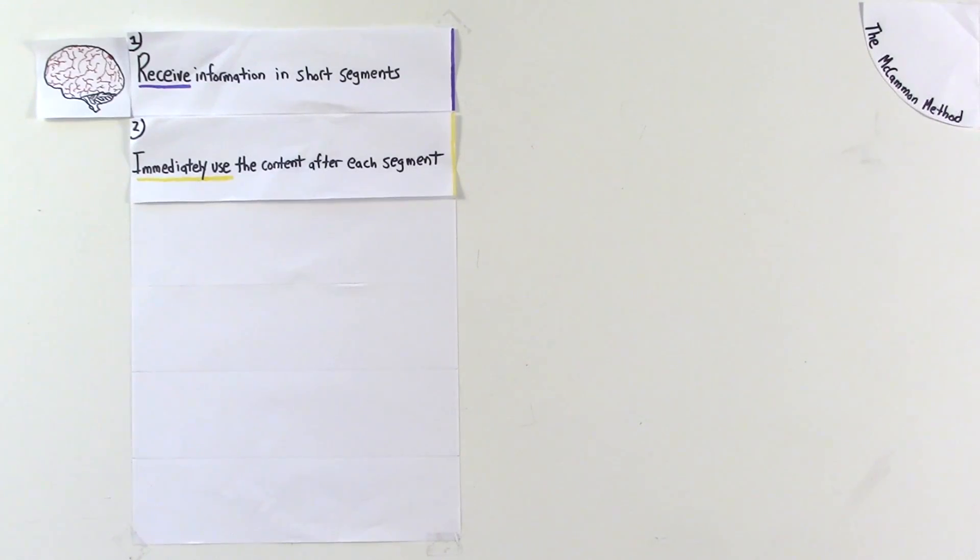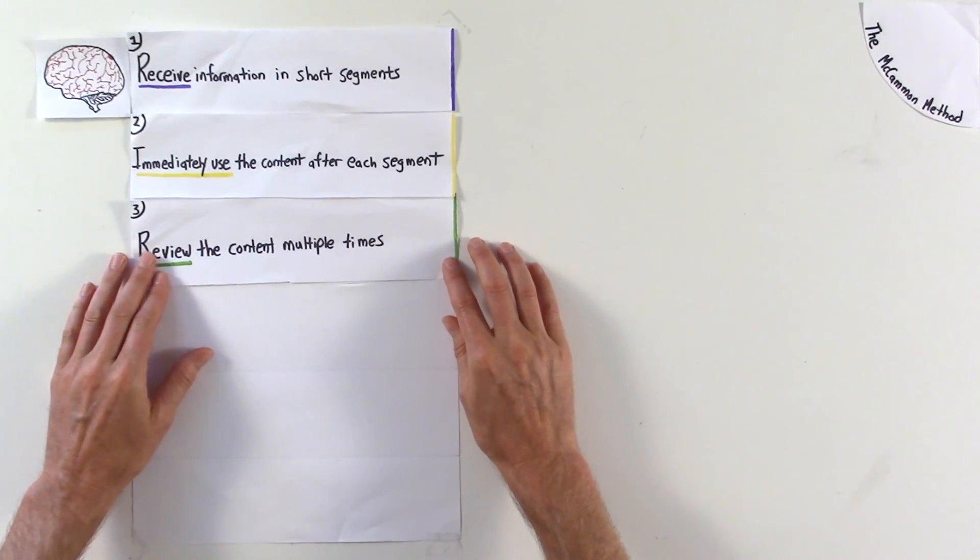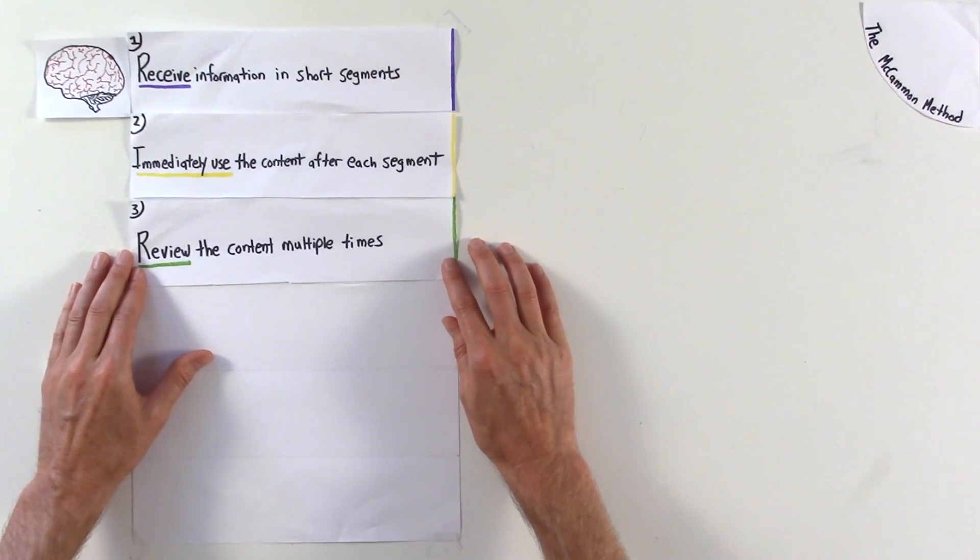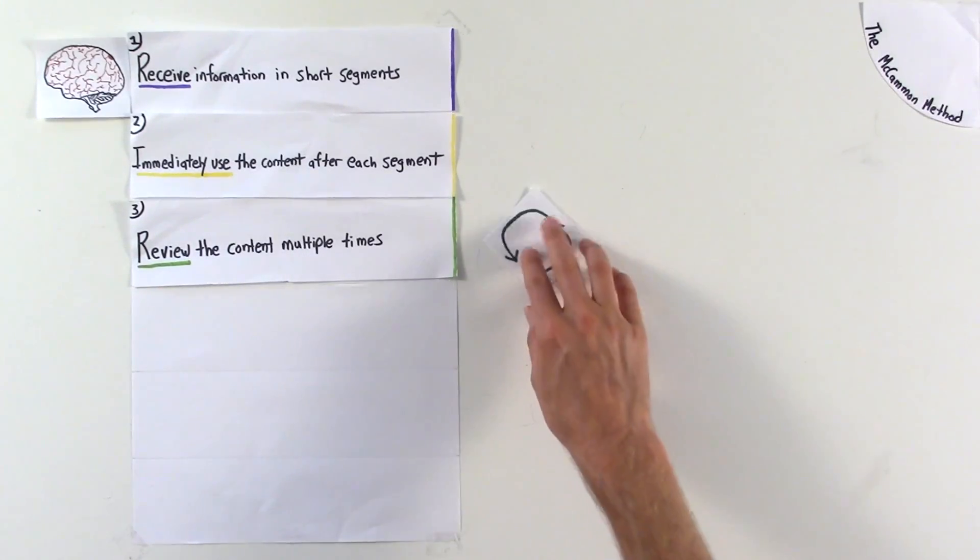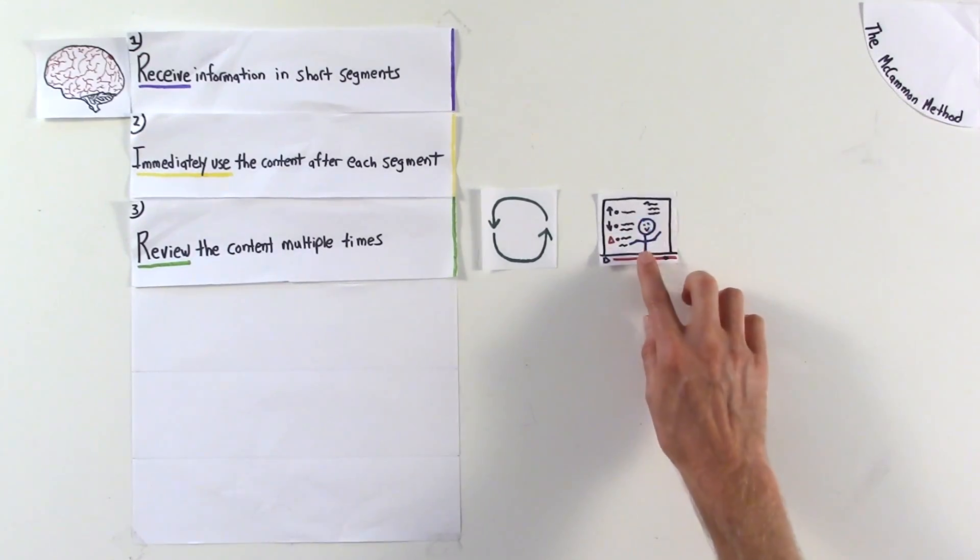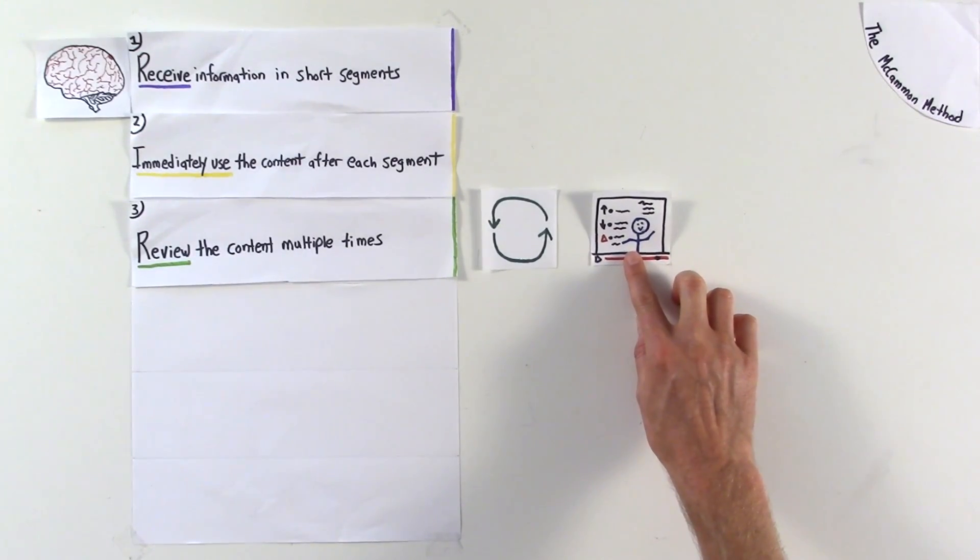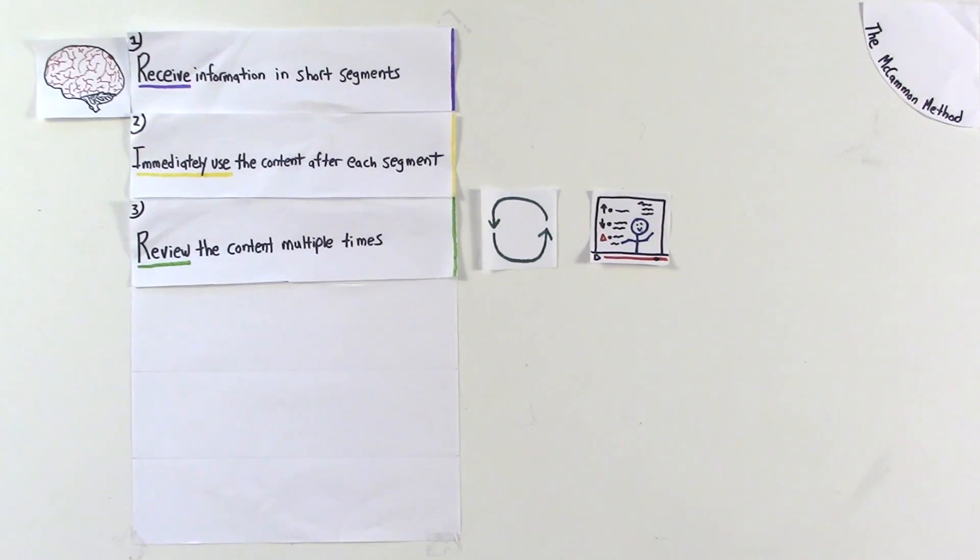Students should review the content multiple times throughout each lesson. Repetition solidifies the information in the brain. Students receive the content by way of these short video chunks, which they can review again at a later time, and as many times as needed. This creates a self-paced learning resource.